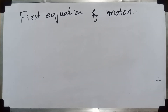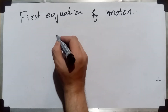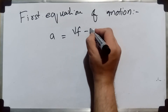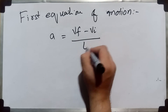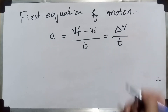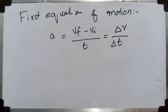We will derive the first equation of motion using acceleration. We know that acceleration is the rate of change of velocity, so let us write down the equation: acceleration is equal to final velocity minus initial velocity divided by time. This is our change in velocity over time. For simplicity, we will use this notation where initial time is zero.